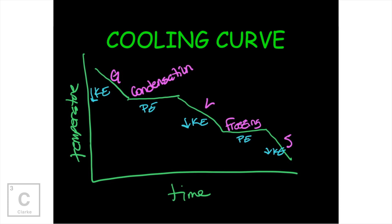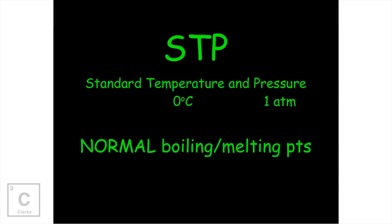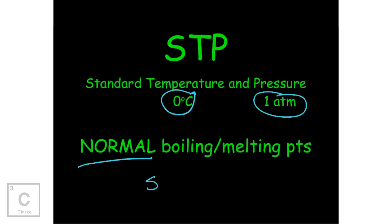During a phase change, there is no temperature change because all of the energy that's being added or subtracted is all about making and breaking those intermolecular forces. When we're talking about these graphs, sometimes you'll hear the acronym STP — standard temperature and pressure. Standard temperature is zero degrees Celsius. Standard pressure is like atmospheric pressure: one atmosphere. When we talk about boiling points and melting points, if we use the word 'normal' — normal boiling point, normal melting point — this is the melting point and the boiling point at standard pressure.